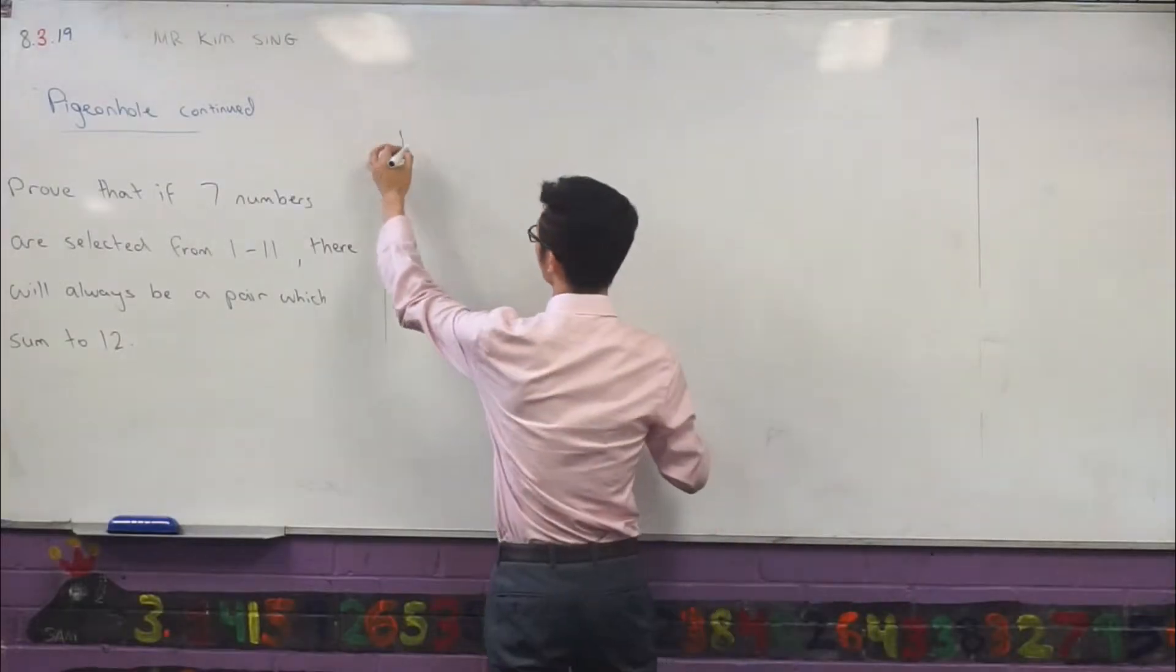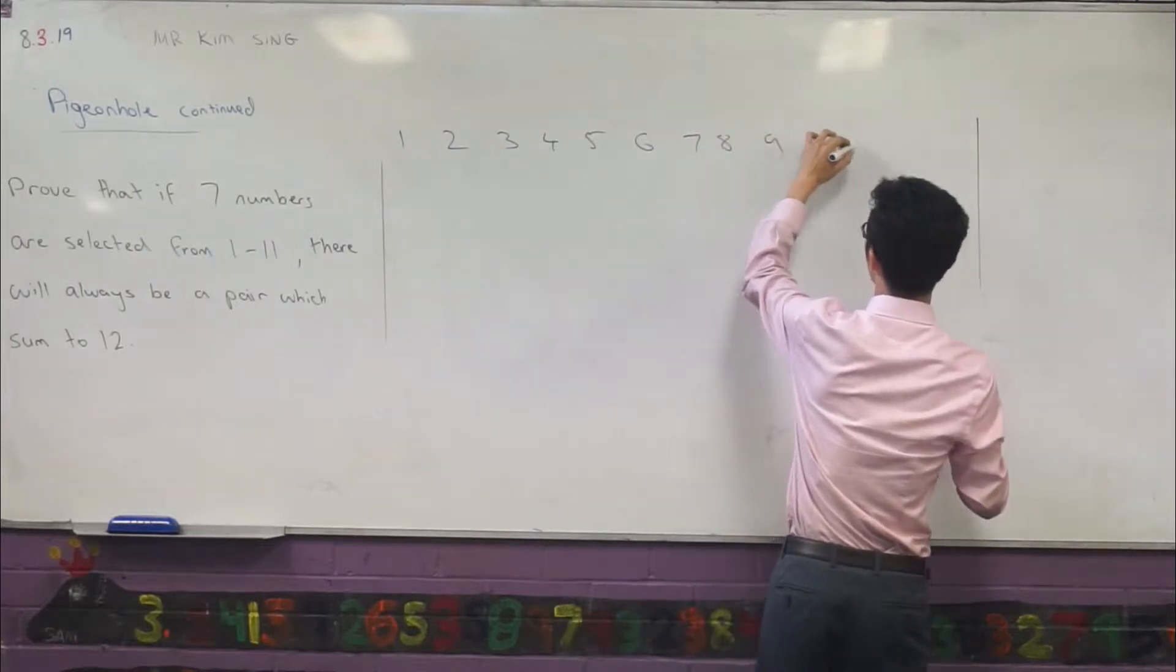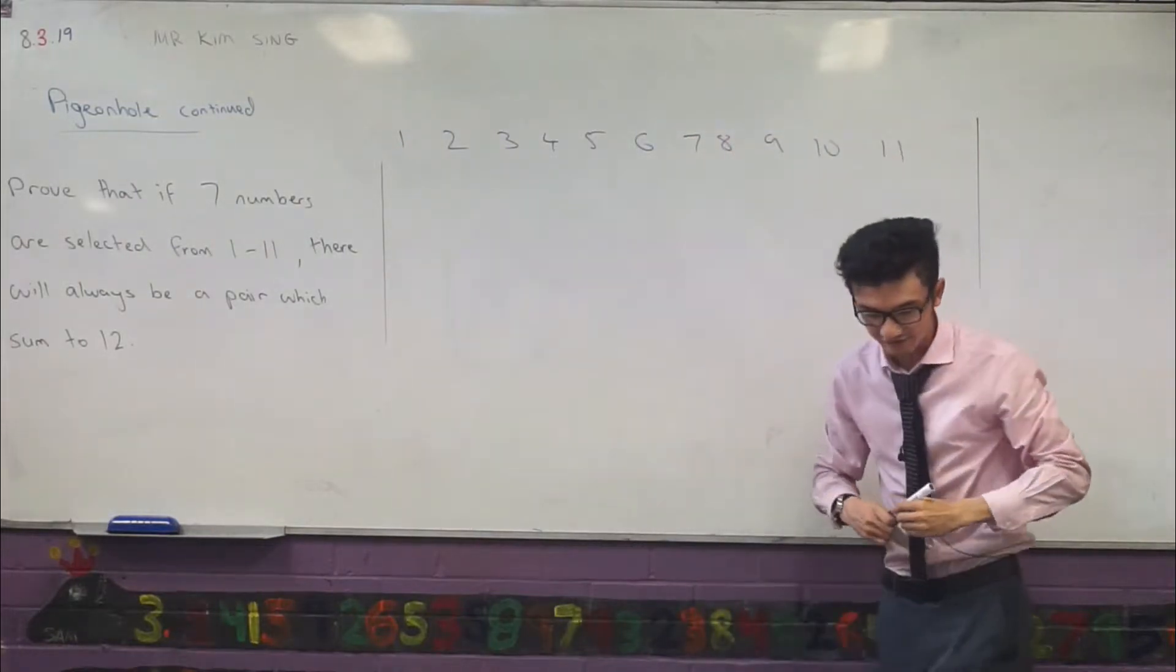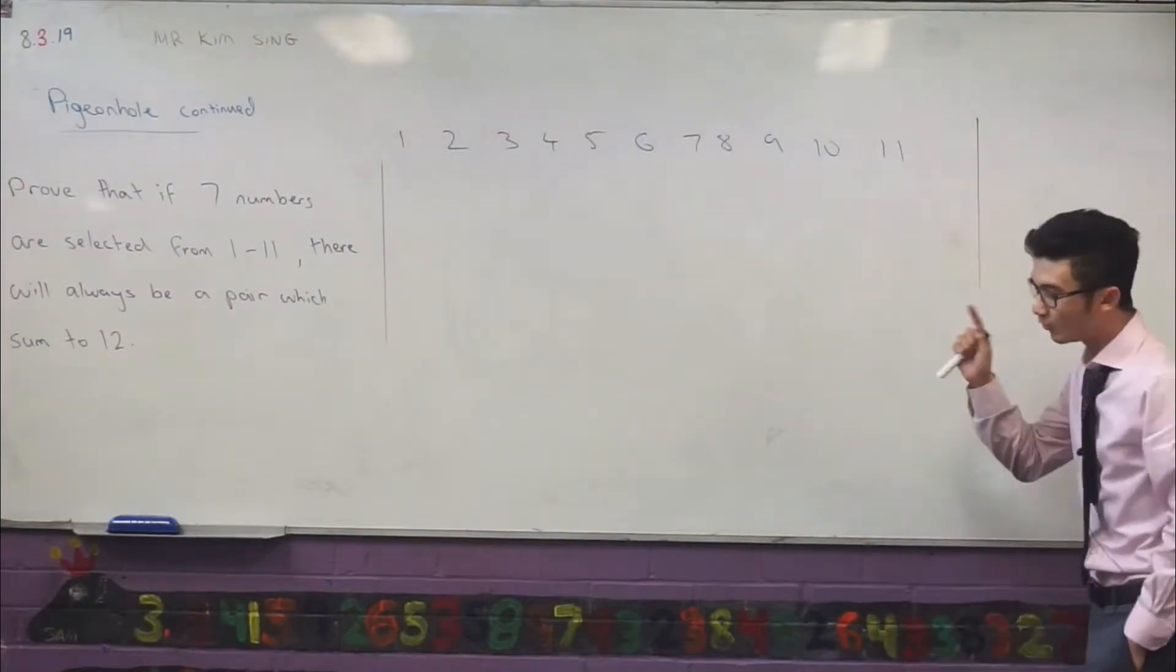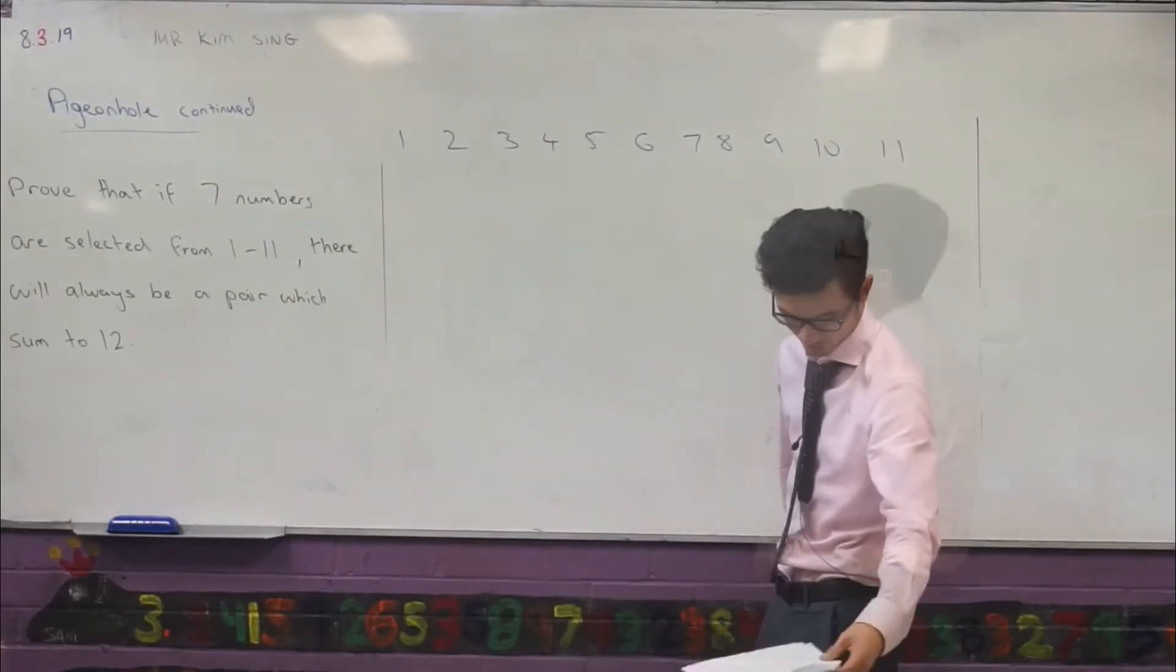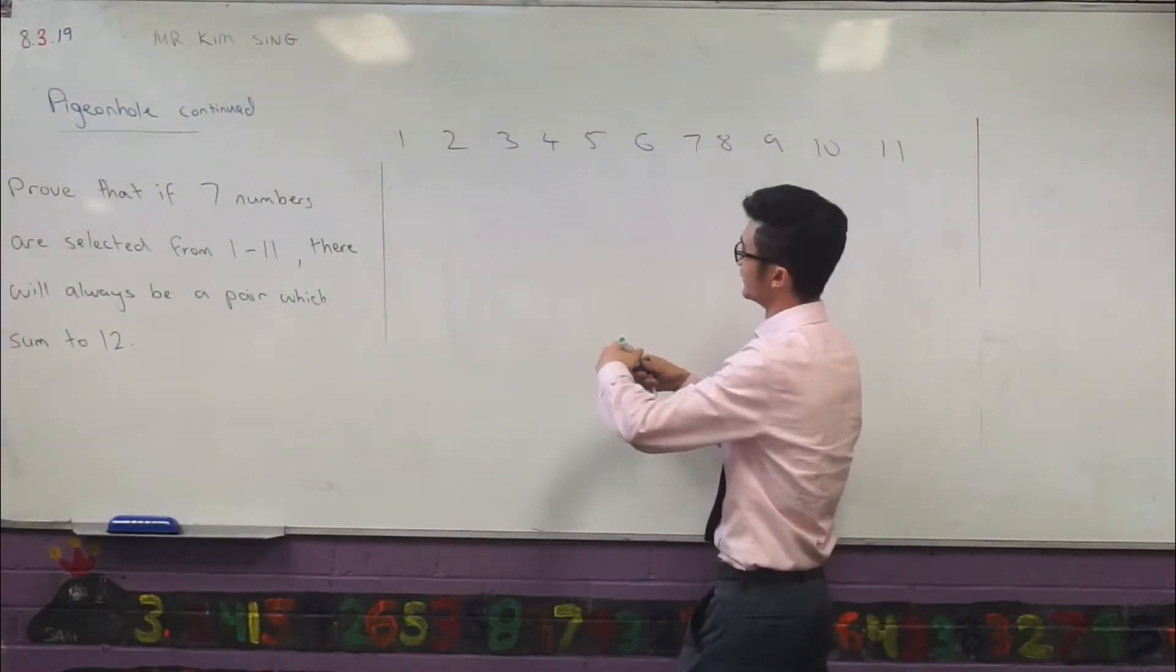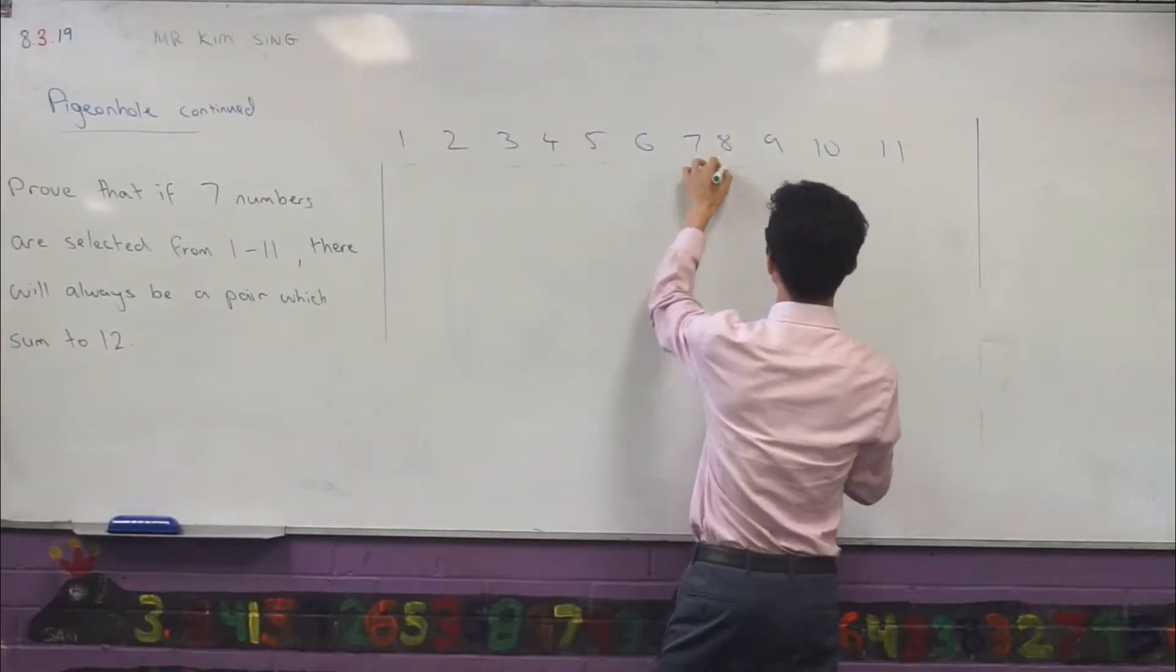If you write out the numbers from 1 to 11, this is saying that if I select any seven of these numbers, I will always get a pair which sum exactly to 12. So let's see if this is actually true or not. Let's just select them at random, for example: maybe 1, 2, 3, 4, 5, 6, 7.